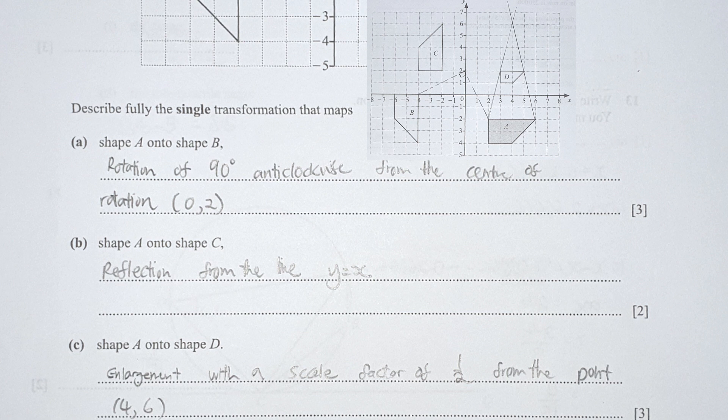For part B, shape A onto shape C, this is a reflection from the line y equals x. For part C, shape A onto shape D, this is an enlargement with a scale factor of 1 over 2 because D is shrinking from the point (4, 6).